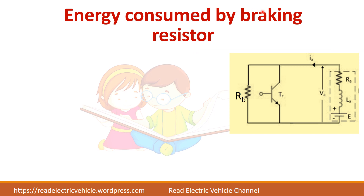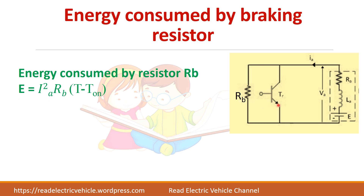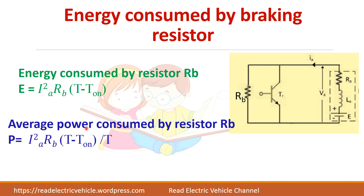Let us find the energy consumed by the braking resistor RB. When the switch is on, all the current passes through the shorted path. Only when the switch is off does current pass through the braking resistor. So energy E = I²·R·Toff, where Toff = T − Ton. This gives the energy consumed by RB. For average power, P = E/T, so power = I²·R·(T − Ton)/T = I²·R·(1 − α).